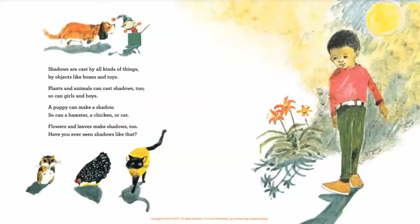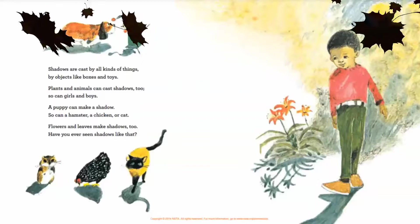Shadows are cast by all kinds of things — by objects like boxes and toys. Plants and animals can cast shadows too, so can girls and boys. A puppy can make a shadow, so can a hamster, a chicken, or cat. Flowers and leaves make shadows too — have you ever seen shadows like that?